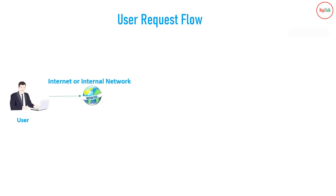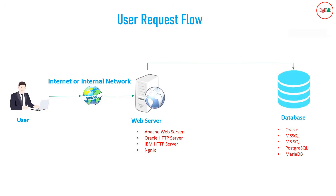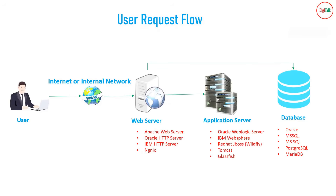The basic user request flow is: whenever a user tries to access any application via browser, depending on whether it is a public application accessible over the internet or an internal application accessible only within the private network, the request is served by a web server. The application on your web server may need to contact your database to get certain data stored there.